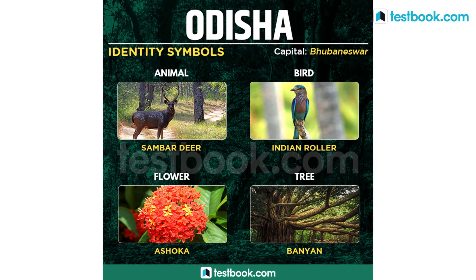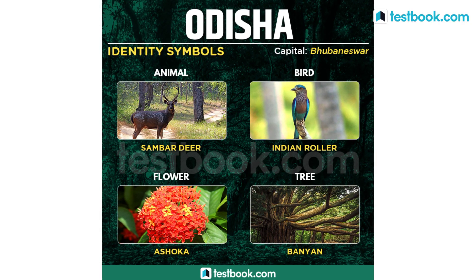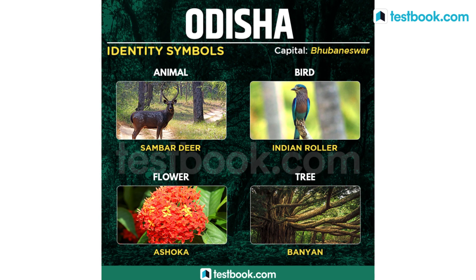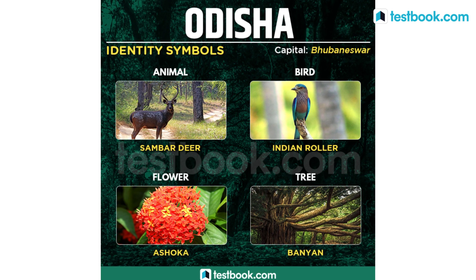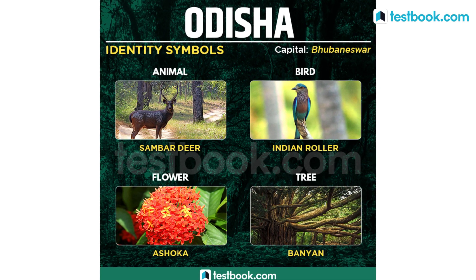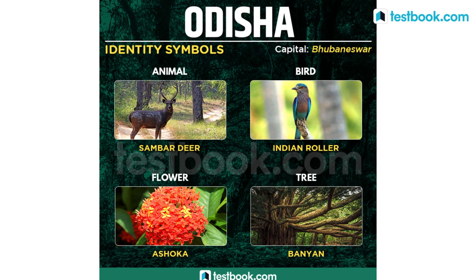Sambar Deer is the state animal for Odisha, Indian Roller is the state bird, state flower is Ashoka and state tree is Banyan.